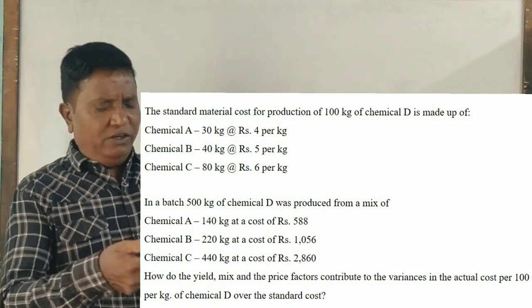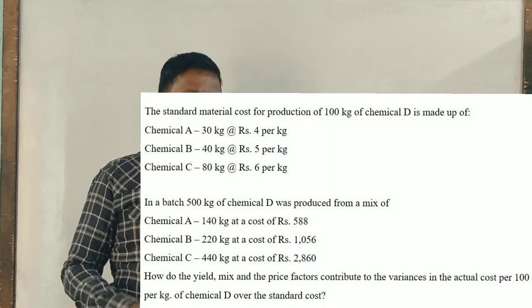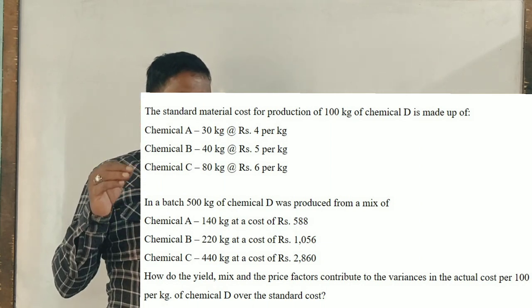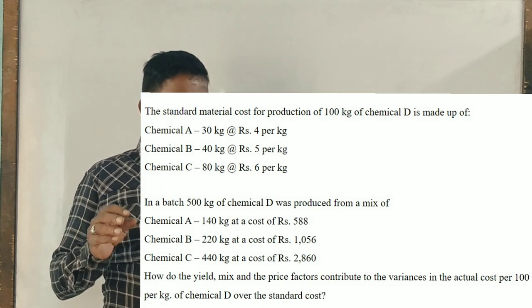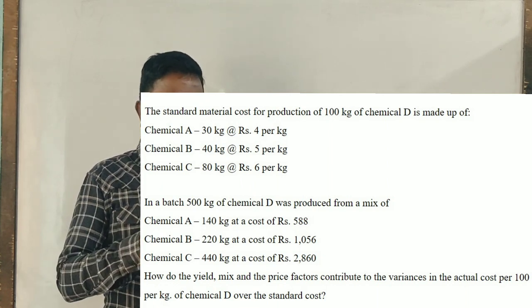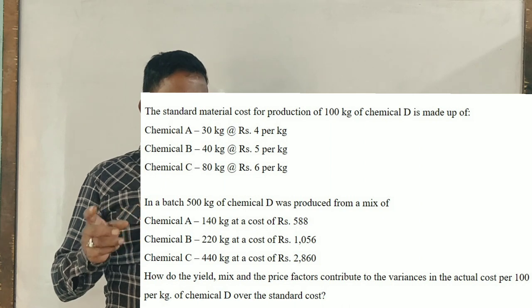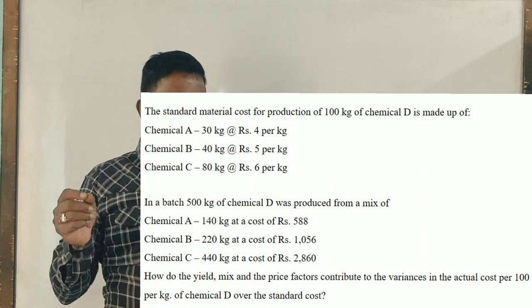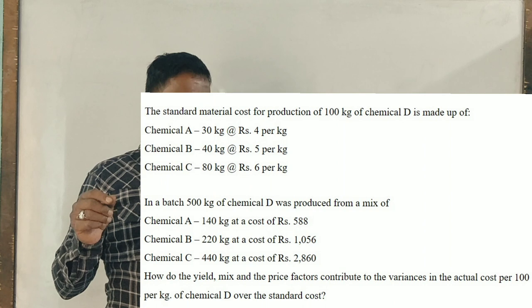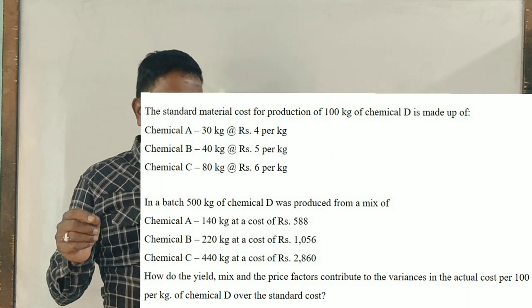This is a material cost variance problem. The standard material cost of production of 100 kg of chemical D is made up of chemical A, B, and C at rates of 4 rupees, 5 rupees, and 6 rupees. In a batch, 500 kg of chemical D was produced from a mix of chemicals A, B, and C - 140 kg, 220 kg, and 440 kg - at costs of 588 rupees, 1,056 rupees, and 2,860 rupees. How do the yield, mix, and price factors contribute to the variance in actual cost per 100 kg of chemical D over standard cost?